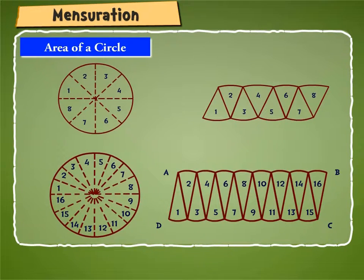Rearrange these. We observe that as the number of sectors increase from 8 to 16, the length of each arc decreases and lines AB and CD look like straight lines.